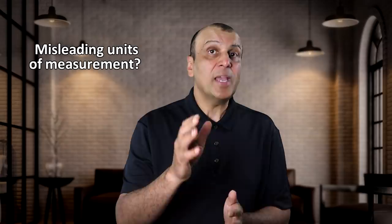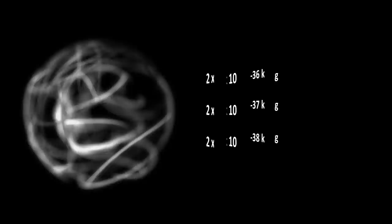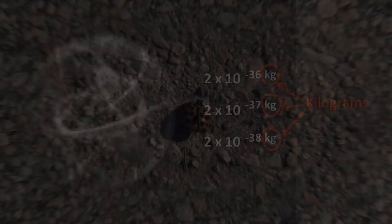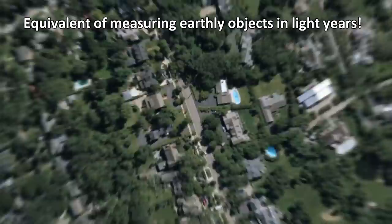First, the argument exaggerates the idea of fine-tuning by using misleading units of measurements, to make fine-tuning seem much more unlikely than it may be. You will see, for example, that the mass of neutrinos is expressed in kilograms. These things are so small that any fluctuation expressed in kilograms would be a huge fluctuation. Using kilograms to measure something this small is the equivalent of measuring a person's height in light years.